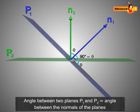So, the angle between two planes is equal to the angle between their normals.